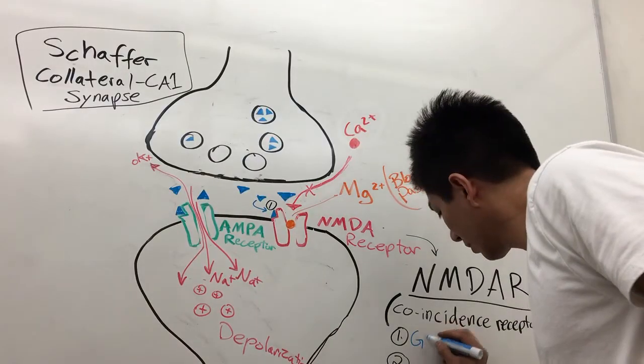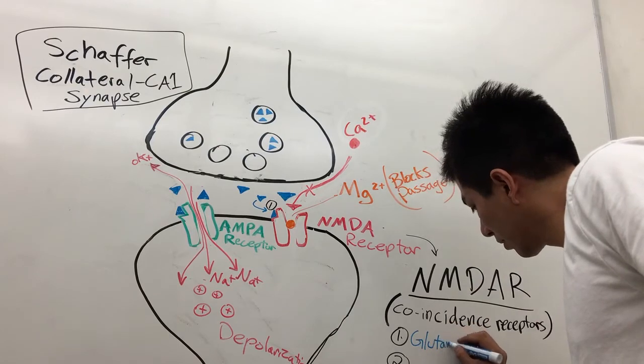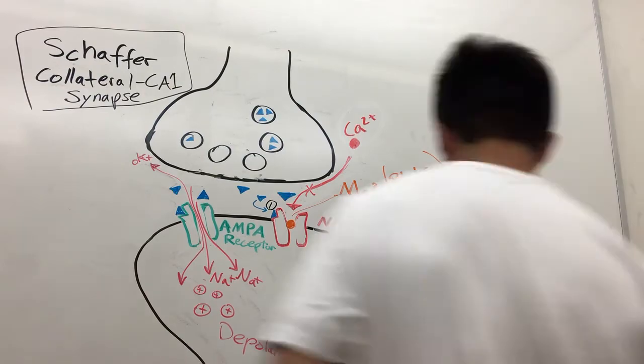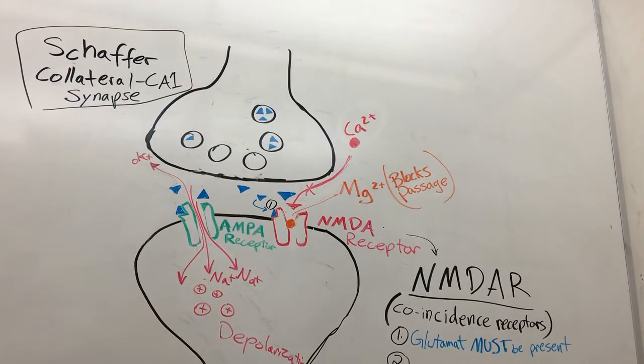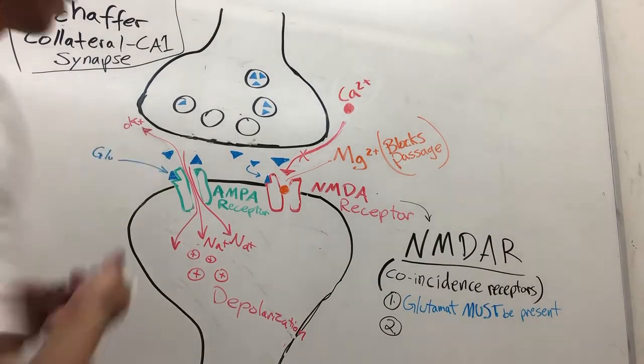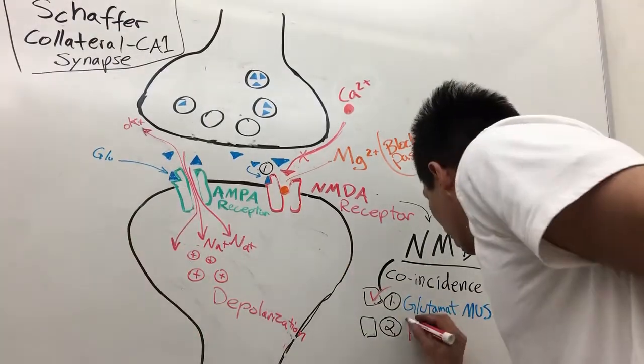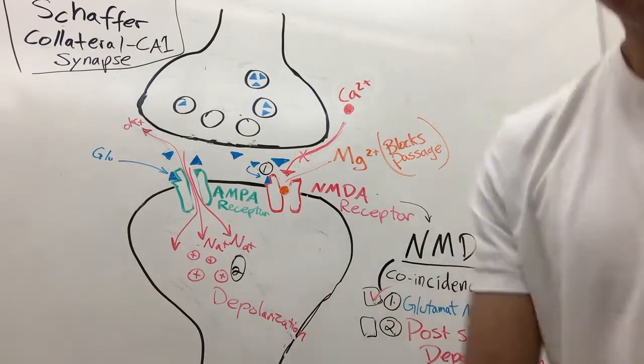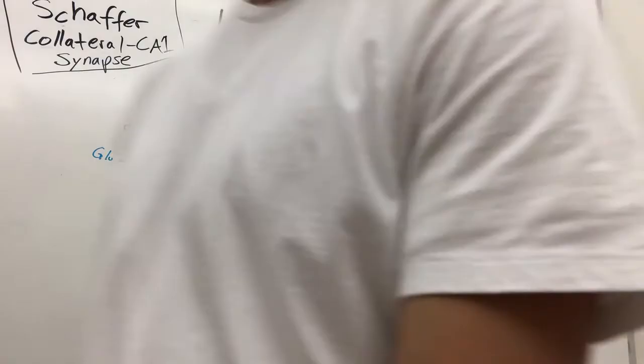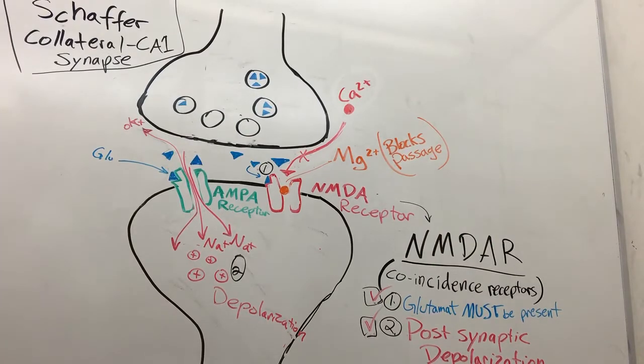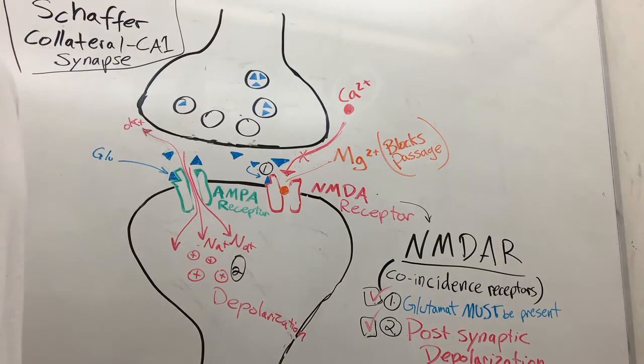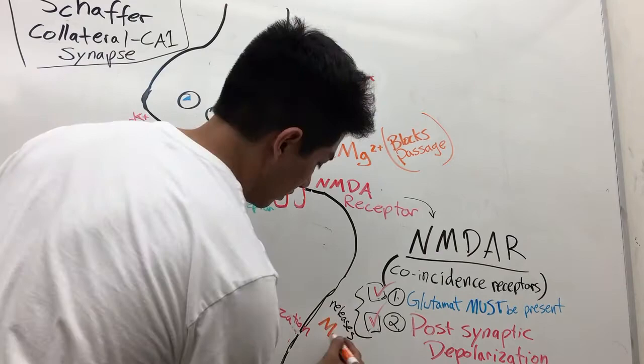How is calcium supposed to enter if magnesium is blocking the way? NMDA receptors are also called coincidence receptors. Coincidence is a unique concept that says two things need to happen for the magnesium to exit. First, we need glutamate presence. Next, we need postsynaptic depolarization from the AMPA receptor and sodium ions. Once we get enough current and glutamate presence, magnesium will leave and calcium will enter, starting the cascade for long-term potentiation.